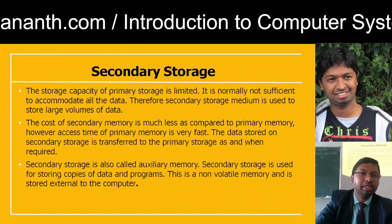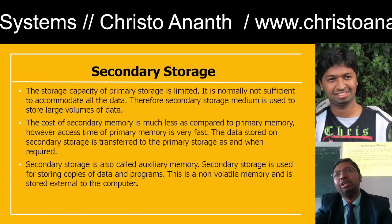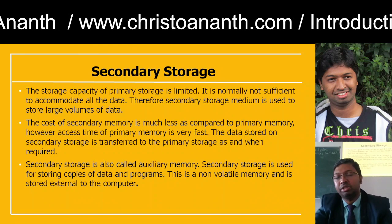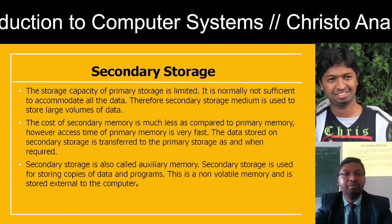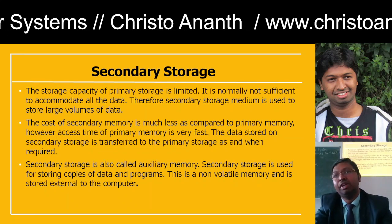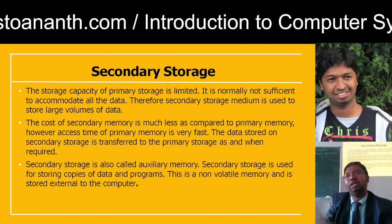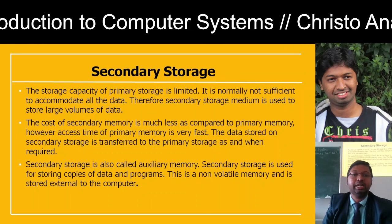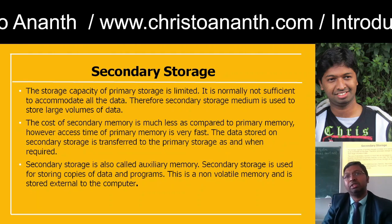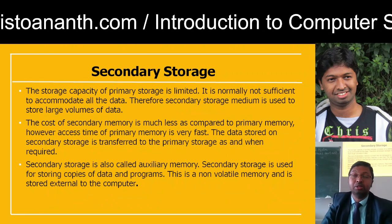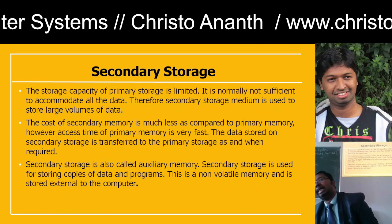Secondary storage is used because the capacity of primary storage is limited and cannot accommodate all the data. Secondary storage stores large amounts of data at a lower cost than primary memory, though primary storage access time is much faster. Data stored on secondary storage is transferred to primary storage as and when required. Secondary storage is also called auxiliary memory and is used for storing copies of data and programs. Primary storage is volatile; secondary storage is non-volatile because it is external to the computer.